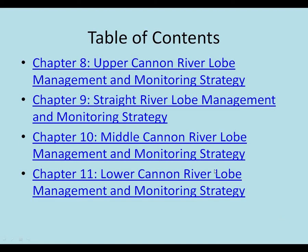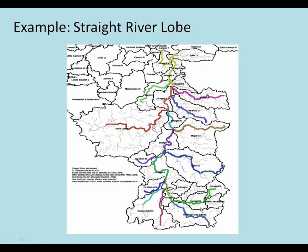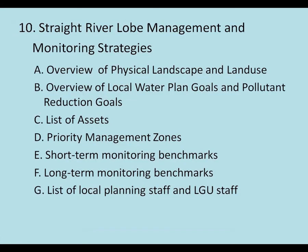Then we got into each of the lobe strategies — those four lobes of the watershed. I'm just going to show you an example of the Straight River lobe. This is the Straight River and these are the sub-watersheds within it. Owatonna is kind of in the middle there, for those of you familiar with Southeast Minnesota. Each of the lobe sections follows the same pattern.